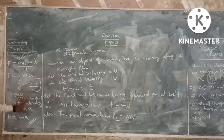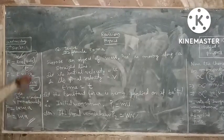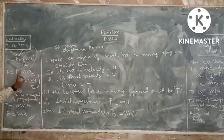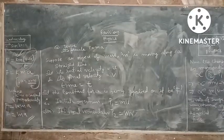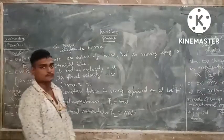Now, force equals ma. Hence proved: since v minus u divided by t equals acceleration, therefore F equals ma. Hence proved. Thank you.